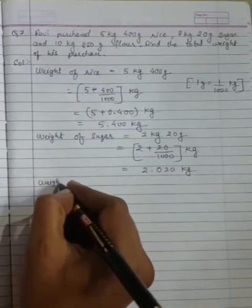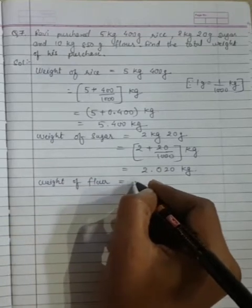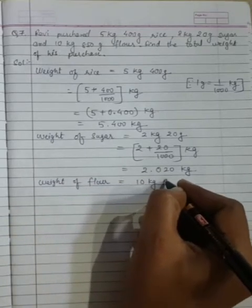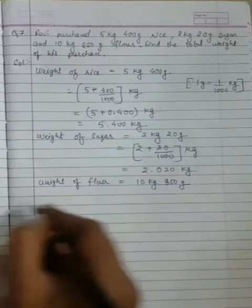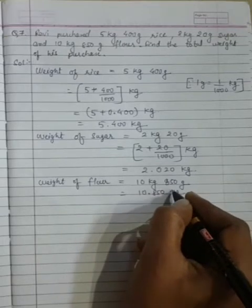Now weight of flour equals 10 kg 850 grams. Can I write it as 10.850 kg? Yes.